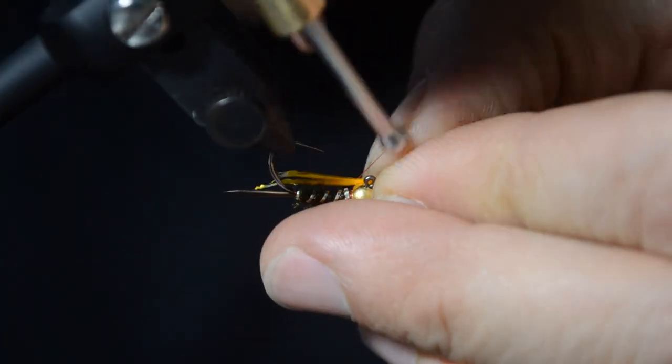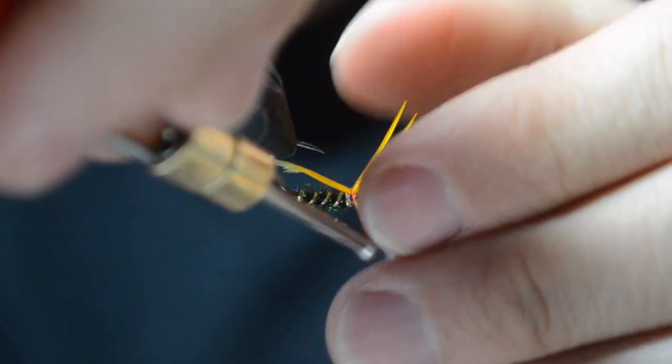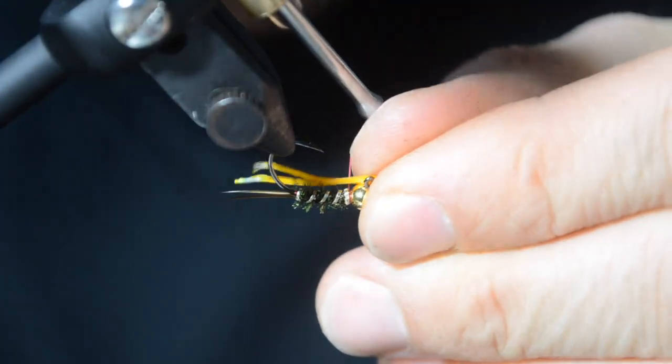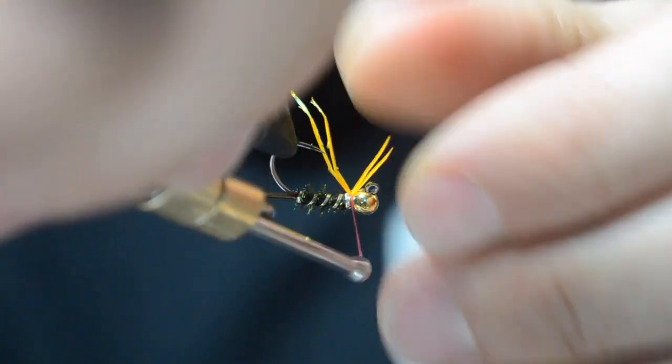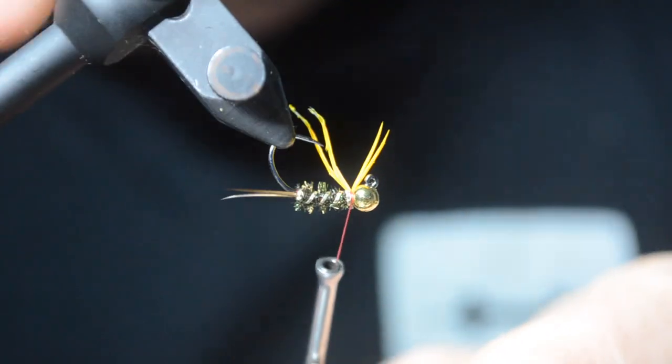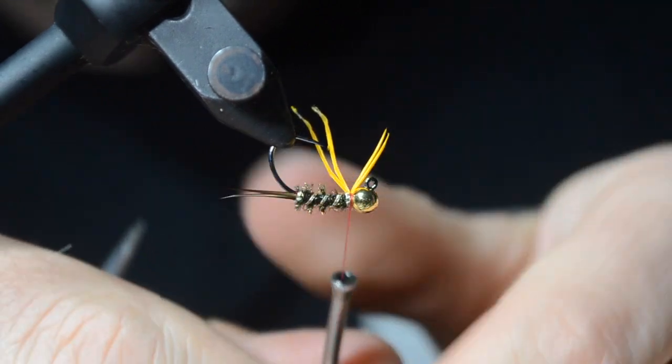So here you'll see I'm tying the biats forward. For me, this is the position I like to tie them in, just because when I'm dealing with the hackles and I bring them, when I'm ready to lock them down and bring them forward, it just works out easier that way.